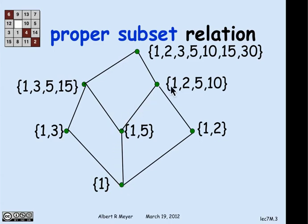And also, there's a path from 1 up to 1, 2, 5, 10, because 1, 2, 5, 10 has a 1 in it and extra stuff. So that's what the picture is illustrating, the proper subset relation on this particular collection of seven sets.